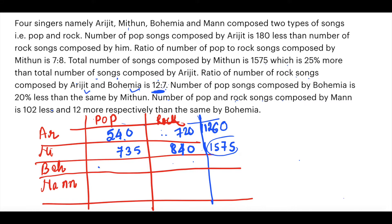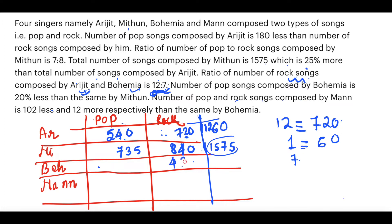The ratio of rock songs by Arijit to Bohemia is 12:7. Arijit's rock is 720, so 12 parts = 720, meaning 1 part = 60. Therefore Bohemia's rock songs = 7 × 60 = 420.